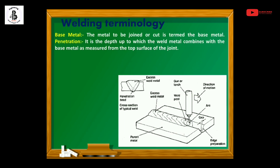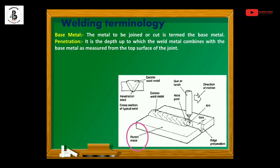Starting with the first term — base metal. The metal to be joined or cut is termed the base metal, also indicated in the figure as parent metal. In simple terms, whatever metal you want to join is considered the base metal — whether it is similar or dissimilar, ferrous or non-ferrous, metallic or non-metallic.